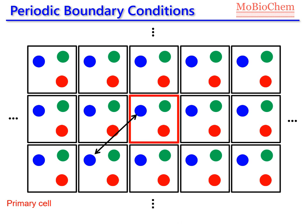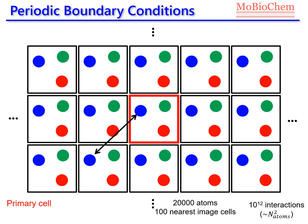Now, let's say we want to compute the interaction between the atoms. We have seen in the previous lectures that we need to compute the potential energy in our system in order to solve the equations of motion. Let's assume that in the primary cell we have, for example, 20,000 atoms, and now we will consider only the interactions with the 100 nearest image cells. If this is the case, we have to compute around 10 to the power of 12 interactions for each time step in our simulations, because in classical MD the number of interactions scales with the square of the number of atoms, approximately.